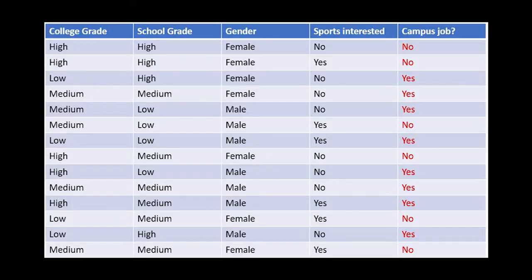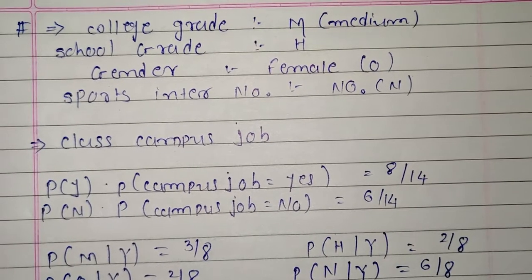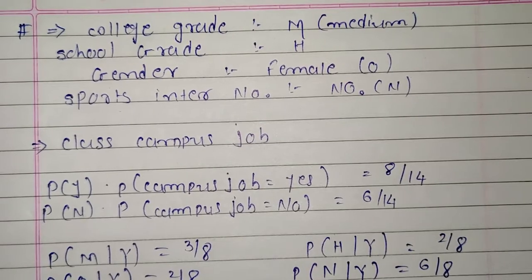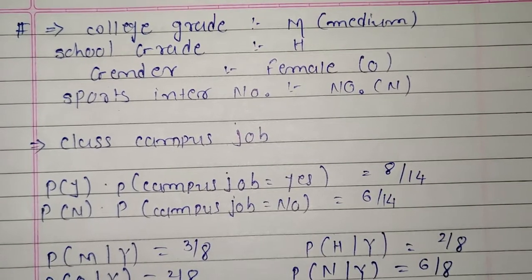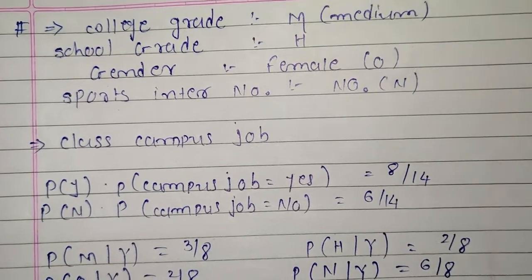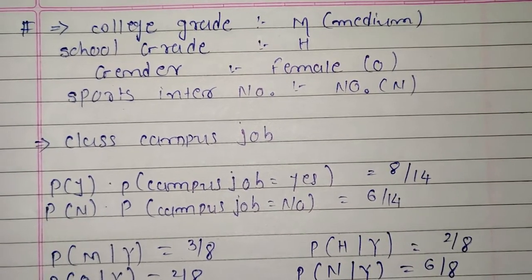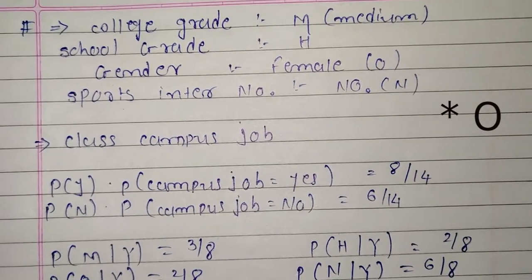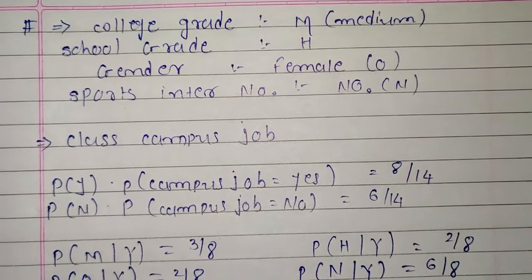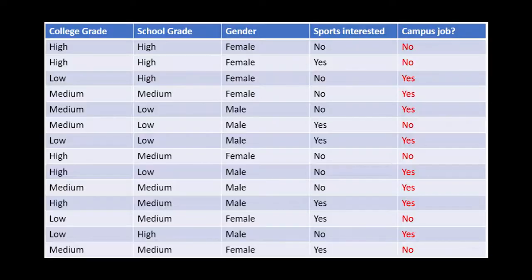Here is the second example. In this example we have 5 classes: college grade, school grade, gender, sports interest, and campus job. The data given is: college grade is medium (M), school grade is high (H), gender is female, and we have to find the interest in sports. We have a total of 14 records.